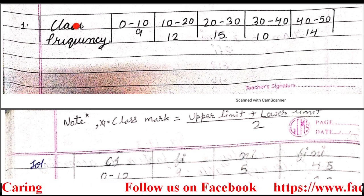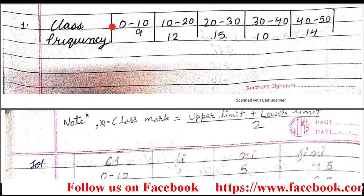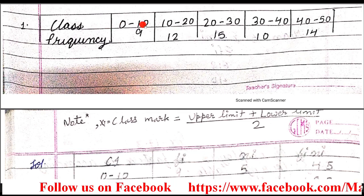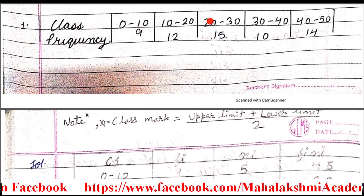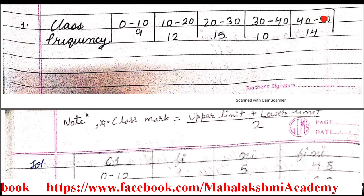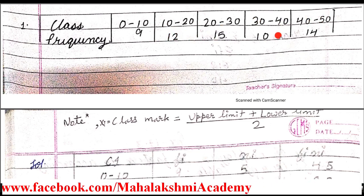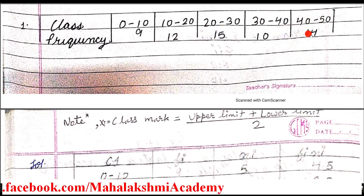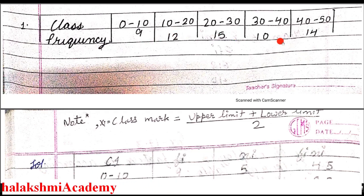The class intervals are given to us. The first class interval is 0 to 10, and its frequency is 9. Like this, the class intervals and their corresponding frequencies are available to us. Now we have to find out the mean of this question.